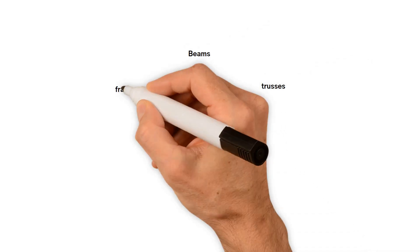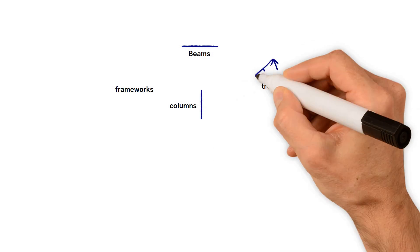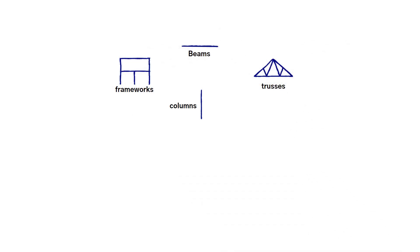It's easier to represent structural elements like beams, columns, trusses, and frameworks by just using a single line to represent the element. These are called structural diagrams.